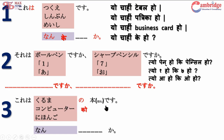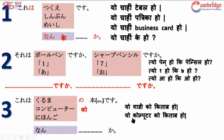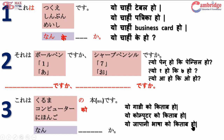'Kore wa kuruma no hon desu' means 'this is a book of/about the car.' Similarly, 'kore wa konpyuuta no hon desu' means 'this is a computer book.' And 'kore wa nihongo no hon desu' means 'this is a Japanese language book.' 'Nihon' refers to Japan, and adding 'go' after it means Japanese language.